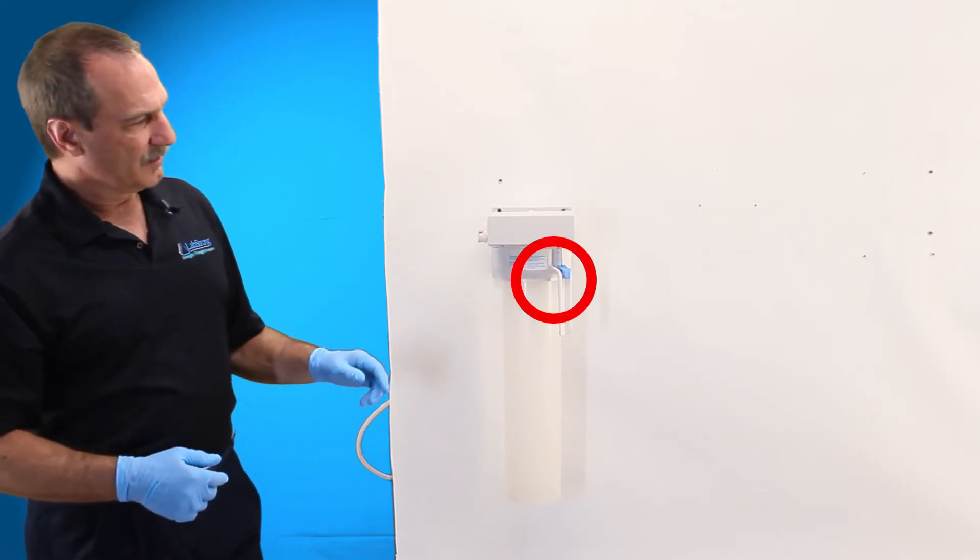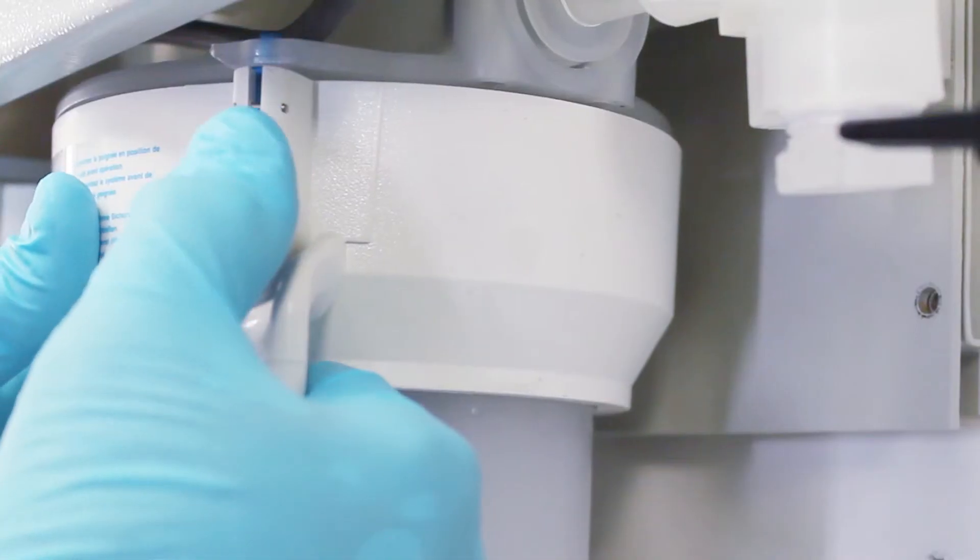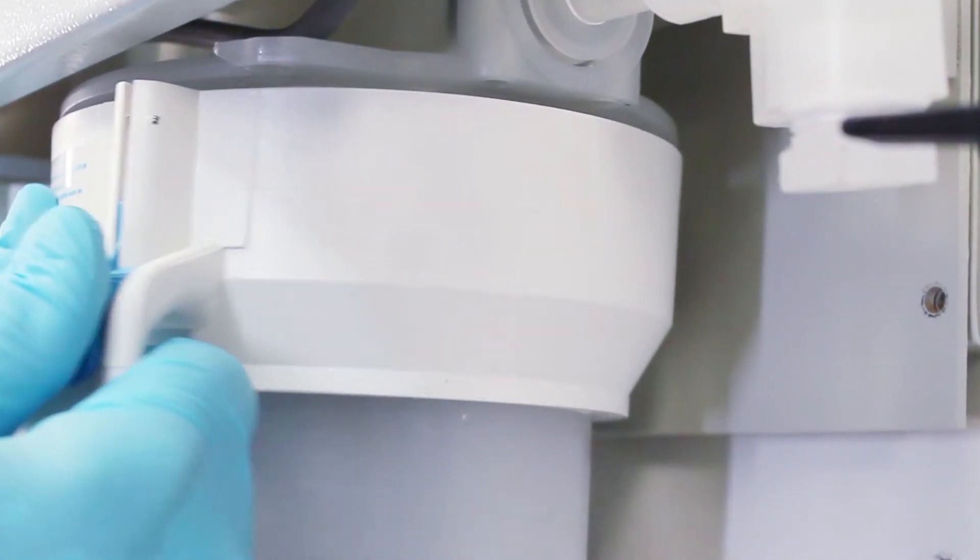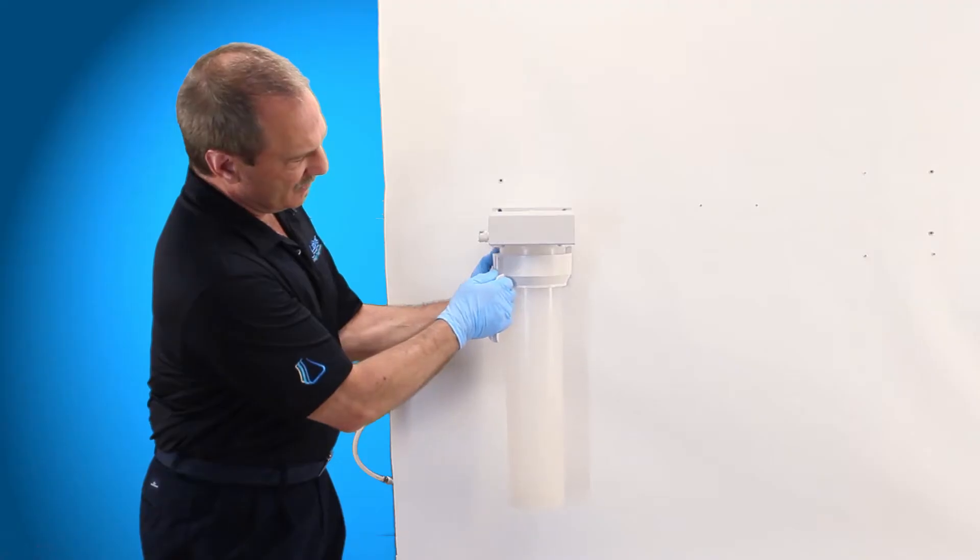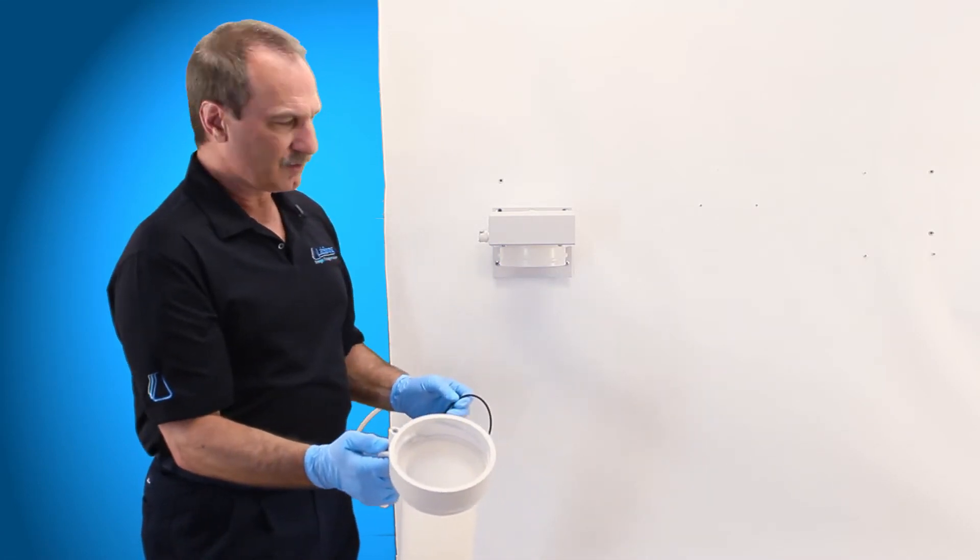Once it's disconnected and it's depressurized you can actually pull down on your pin, quarter turn locking canister, slide that to the side, drops down, and you have your canister and your head section.